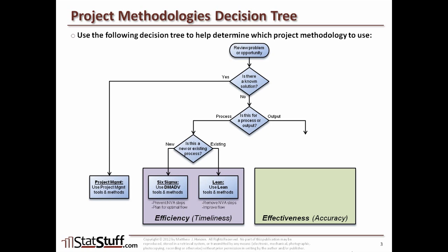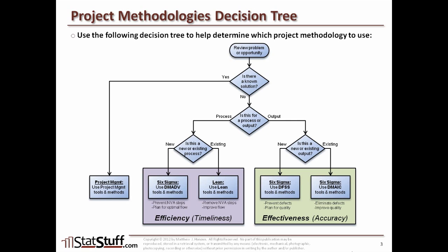From the output perspective, it's going to point to the effectiveness and accuracy side of the methodologies. We would ask the same question: is this for a new or an existing output? If it's for a new output — something new that's being created — then we would use the Six Sigma methodology of DFSS, which stands for Design for Six Sigma, another set of tools and methods helpful when you want to create a new output. However, for an existing output, we'd use a Six Sigma methodology called DMAIC — a five-phase approach that accounts for probably 90 to 95% of most projects and opportunities.